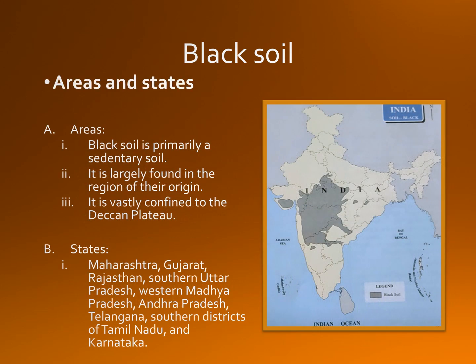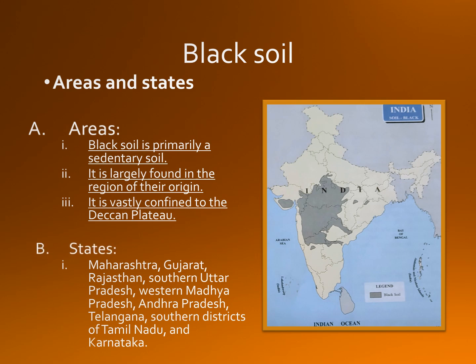Areas and states: black soil is primarily a sedentary soil, largely found in the region of its origin. It is an in-situ soil, vastly confined to the Deccan Plateau. The states where black soil is found include Maharashtra, Gujarat, Rajasthan, Madhya Pradesh, Uttar Pradesh, western Madhya Pradesh, Andhra Pradesh, Telangana, southern districts of Tamil Nadu, and Karnataka. Have a look at the map — black color is used to show the areas of black soil.